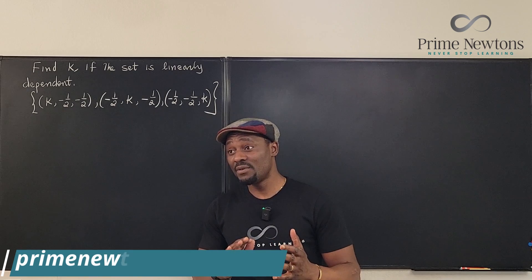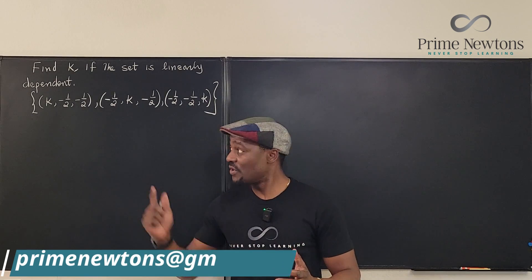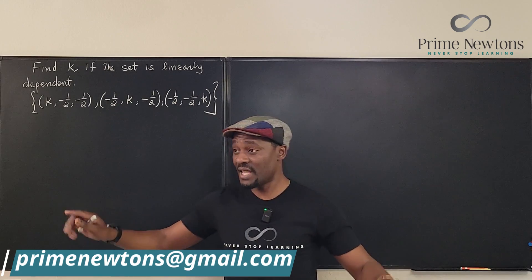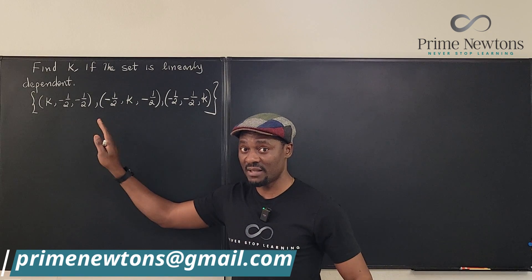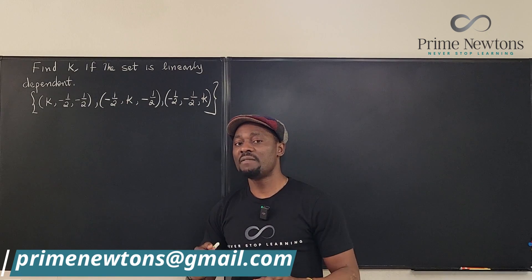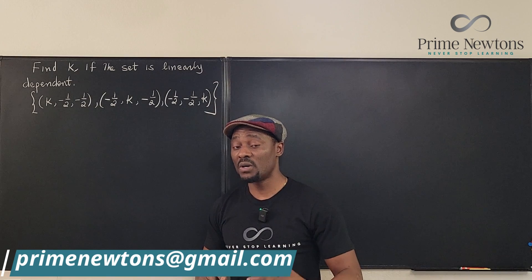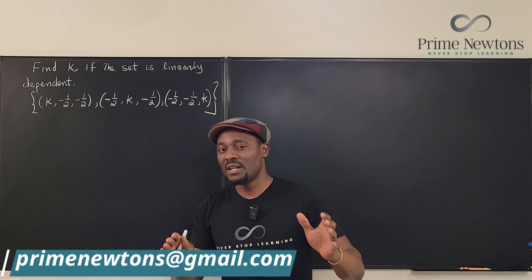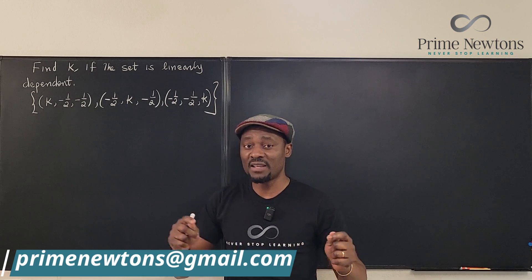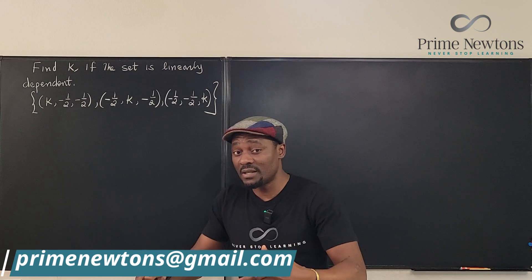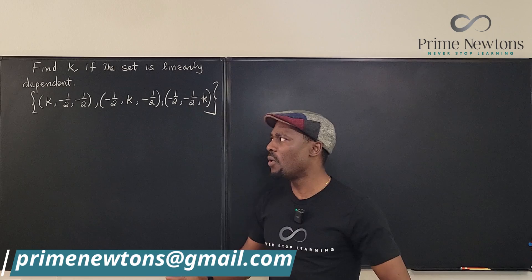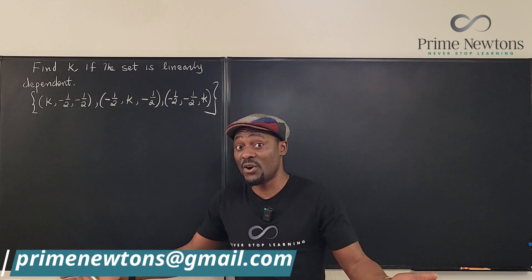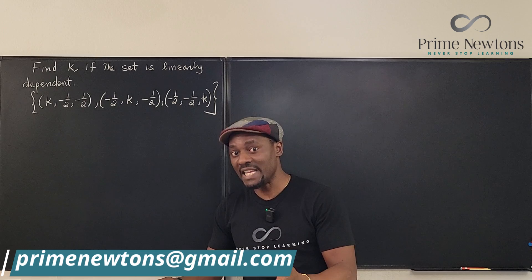Most often, when you get a question like this, it gives you vectors — a set of vectors — and you are asked to find if they are linearly dependent or linearly independent. So you write a linear combination and try to find the constants. If you find constants that are non-zero, they are not linearly independent. But if everything must be zero, you say they are linearly independent.